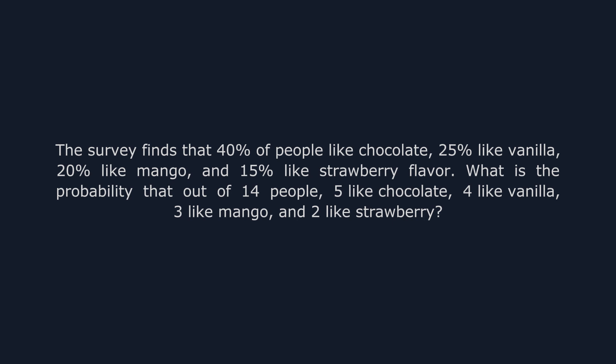Now, this is another classic example of a multinomial distribution. Why? Just like the previous problem, we're dealing with more than two possible outcomes. In this case, the different ice cream flavors. We have four categories: chocolate, vanilla, mango, and strawberry. And we want to know how many people fall into each category over 14 trials.